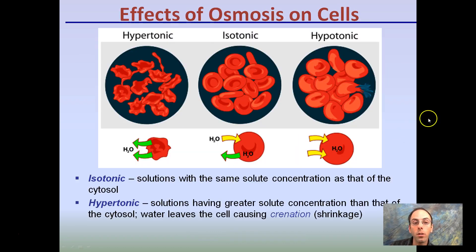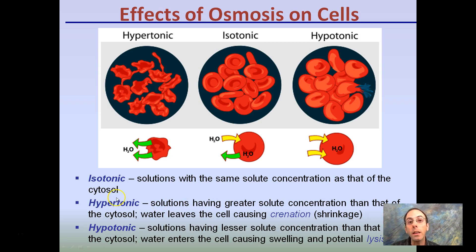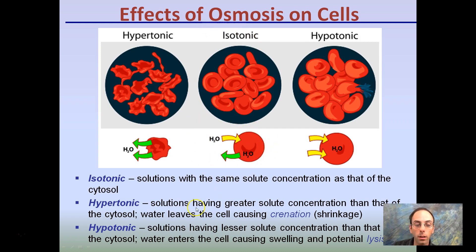Starting with that same image and defining our three key vocabulary terms, isotonic is the one in the middle. This is where solutions have the same solute concentration as that of the cytosol. The cytosol is the interior portion of the cell. Here we see water moving in and water moving out — equal in, equal out. That's isotonic.